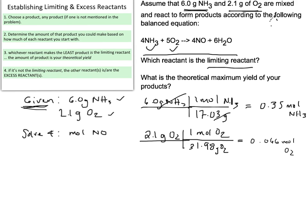Now I've taken my givens and converted them into the language of the equation. I must take each of these amounts and convert using the mole ratio into what I'm solving for — moles of NO. Taking 0.35 moles of NH3, I find the mole relationship between NO and NH3 from the balanced equation: 4 moles of NO for every 4 moles of NH3. That one-to-one relationship makes the calculation easy.